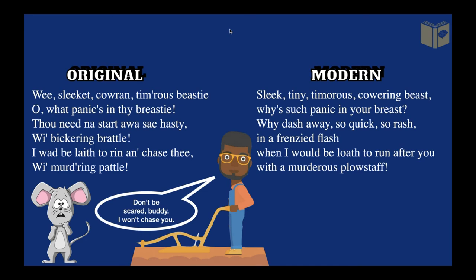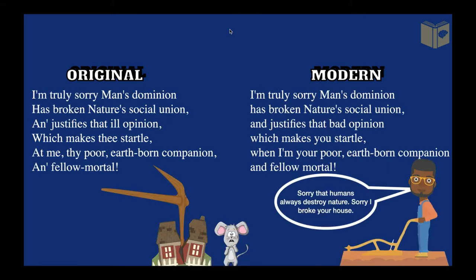Now we've heard the poem, let's go through a summary. In the first stanza — and this is important — in poetry we say 'speaker' not 'narrator.' The speaker is a farmer, talking to a tiny mouse whose home he has just destroyed on the farm. He's saying: don't be scared of me, I'm not going to chase you with my plough.